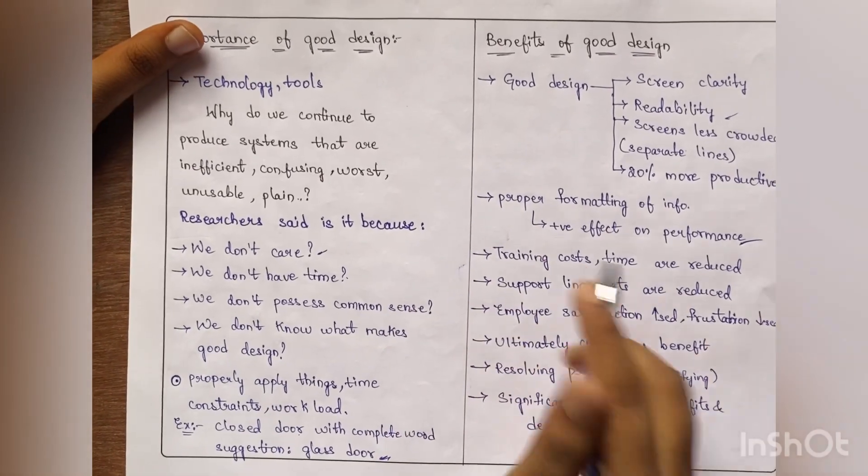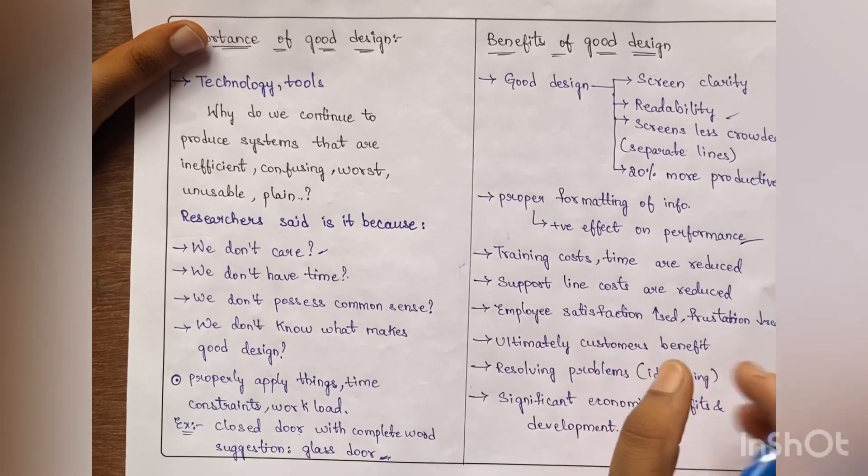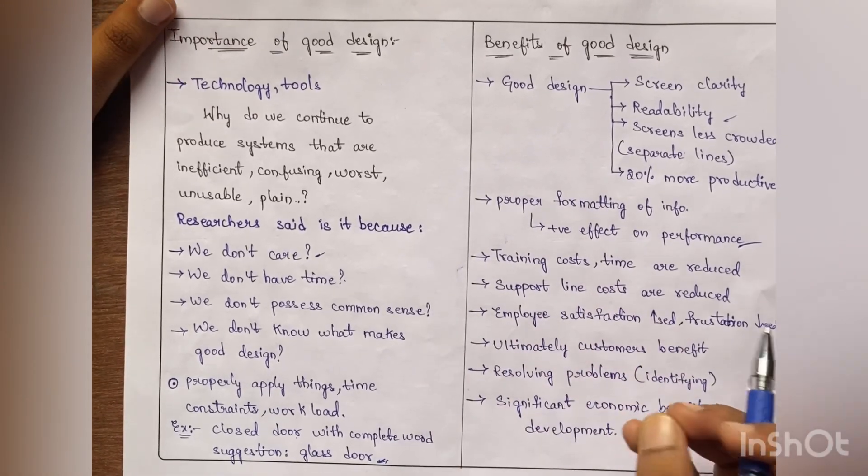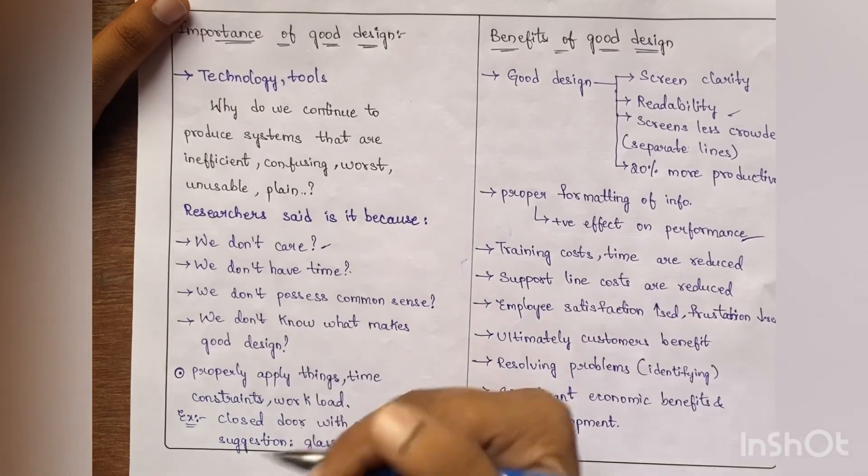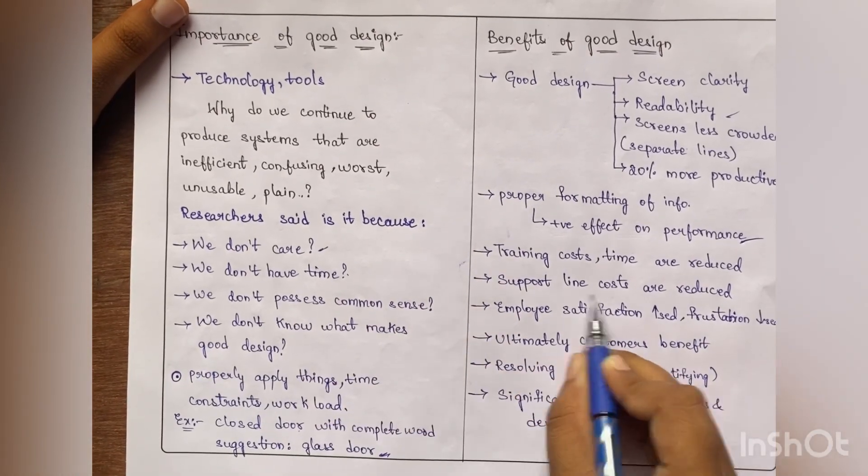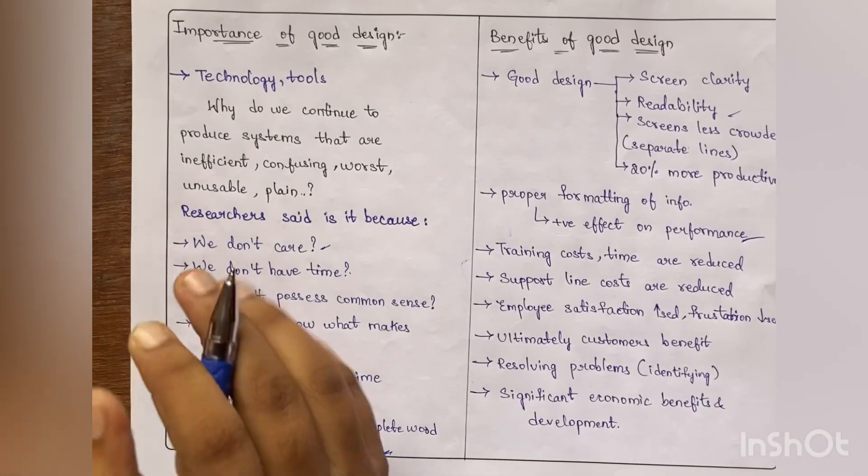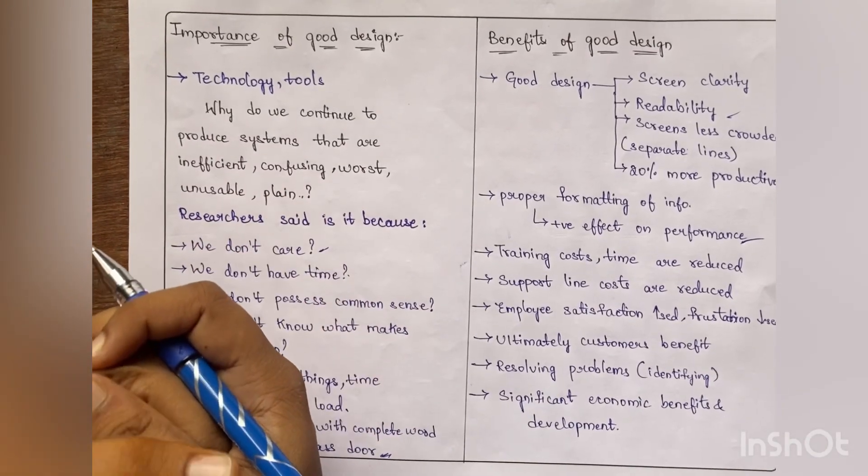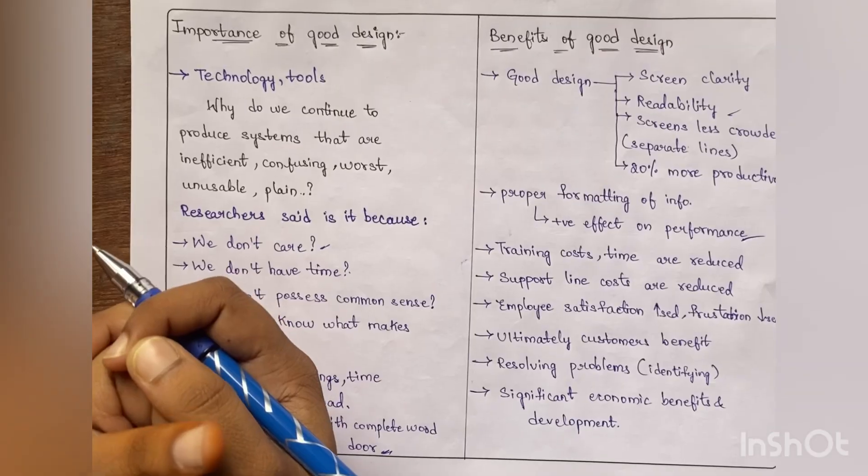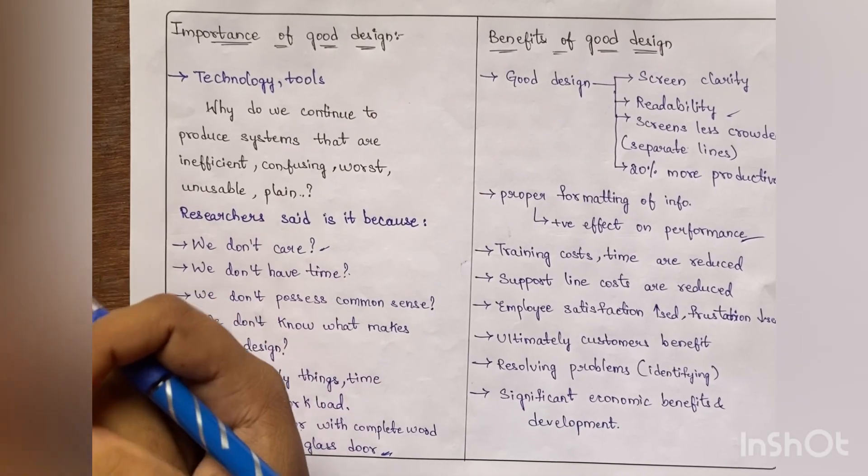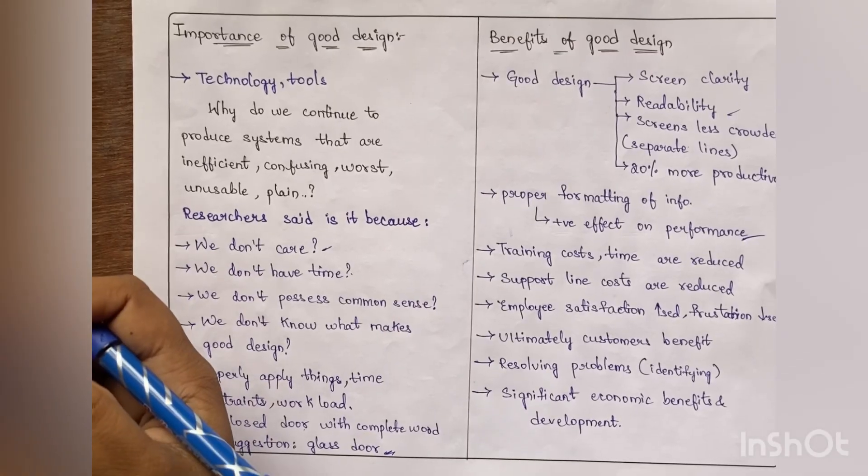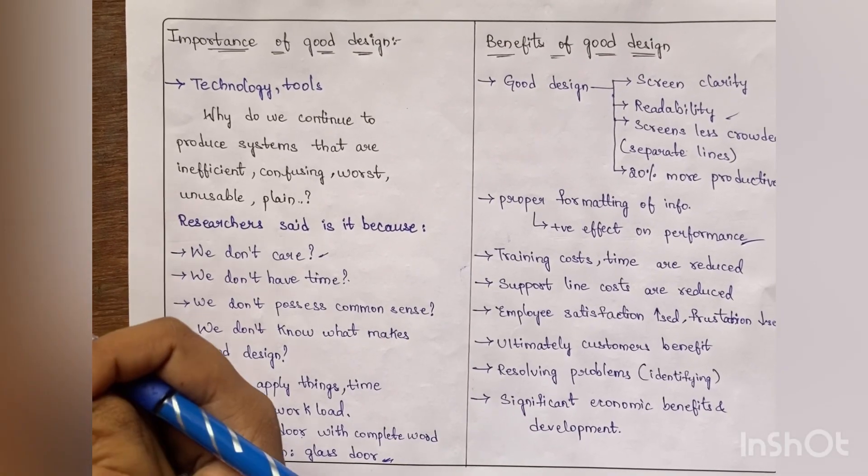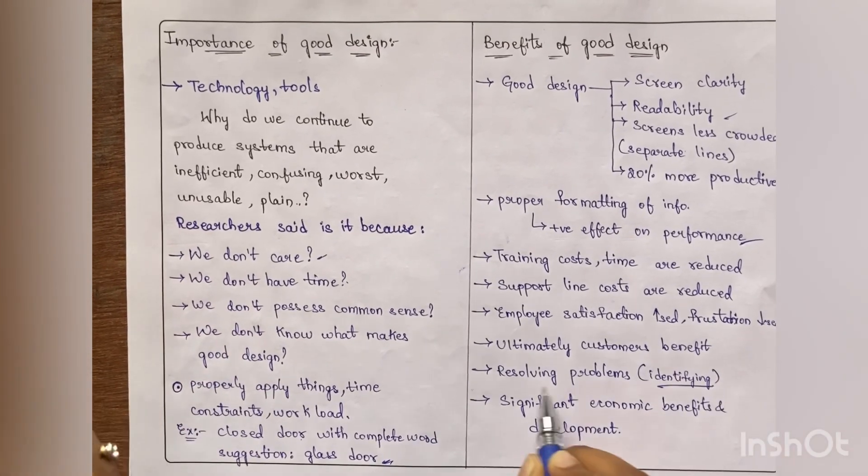This good design helps in reducing the cost, training cost and training times are also reduced. Support line costs, assistance and guidance also reduces. If the design is good, people, the employees get satisfaction and the frustration is obviously reduced. Ultimately the organizations, the customers related to that organization are benefited. People can easily identify the problems and also resolve them.